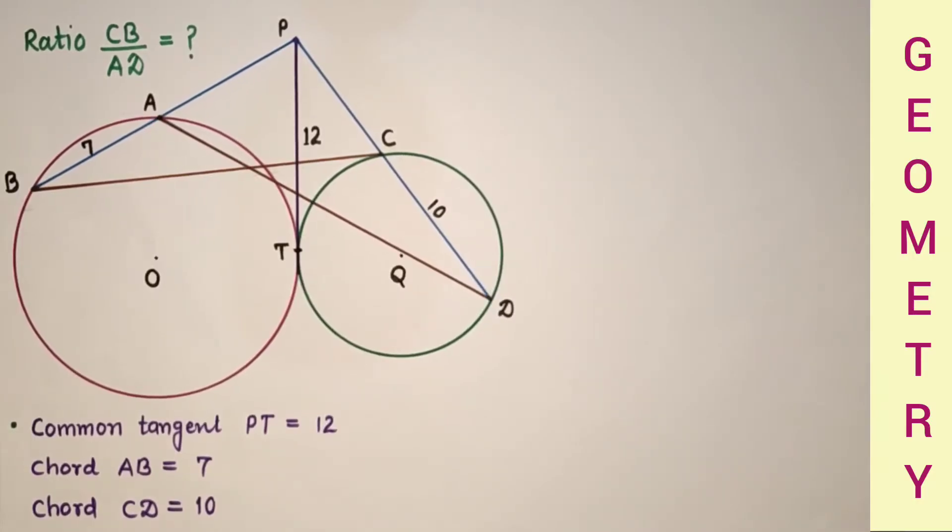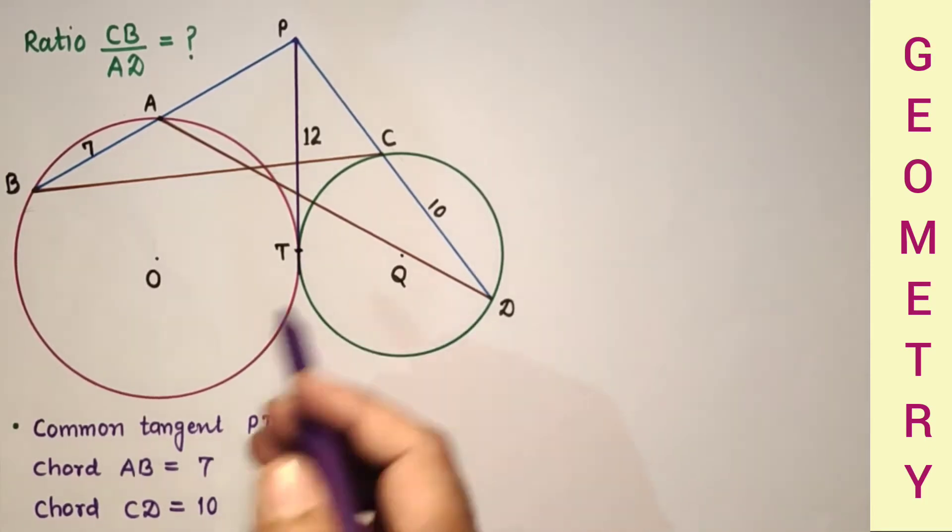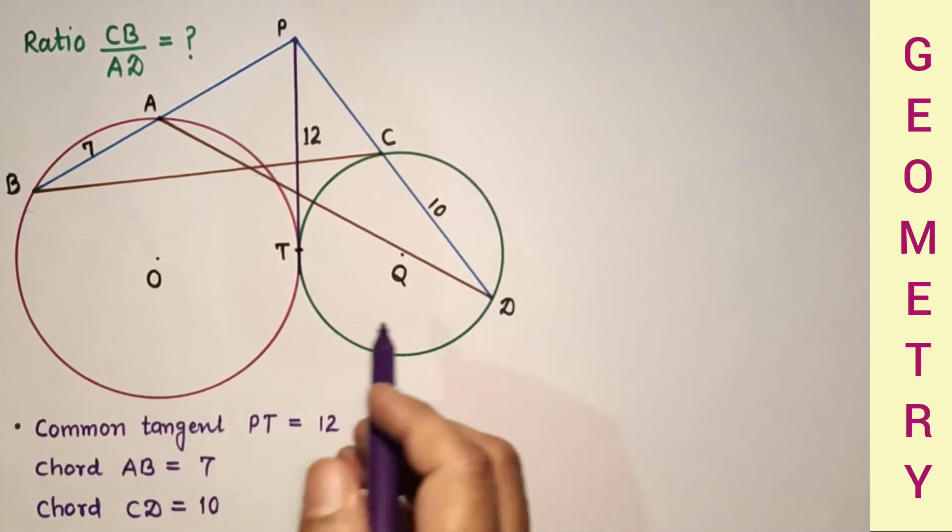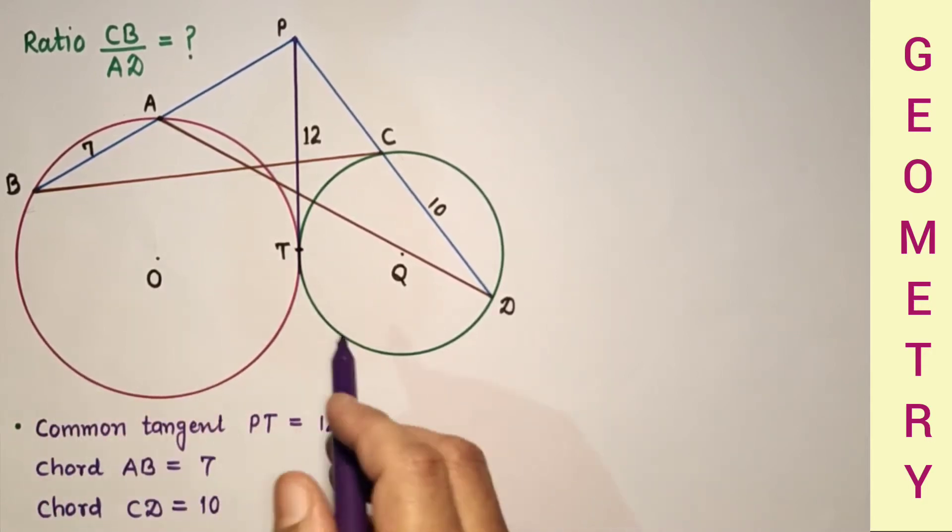Hello my respected and learned viewers, friends and dear students. Today we will discuss this question. It is given that there are two circles touching externally and circles are of different radii.